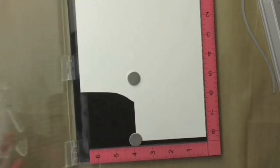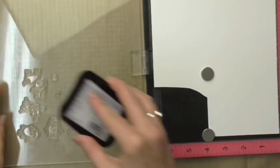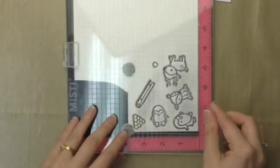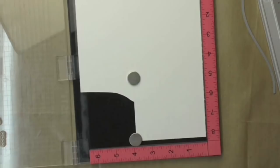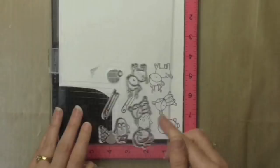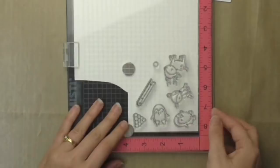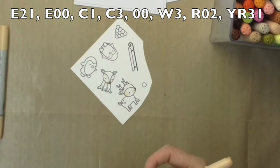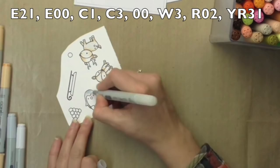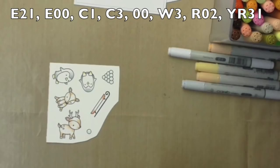These are from the Toboggan Together set from Lawn Fawn and using my Memento Tuxedo Black ink I'm going to stamp these onto some Neenah Solar White cardstock because I'm using my Copic markers. Now I want this card to have a really soft finished feel so I'm using some light colours and blending them all out using the colourless blender. Once I have that done I'm going to trim out each of my little critters but they do have coordinating dies if you want to get them.